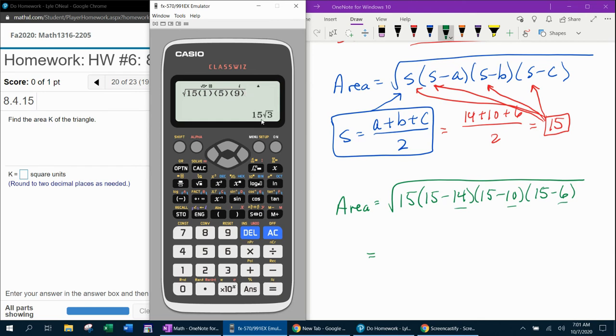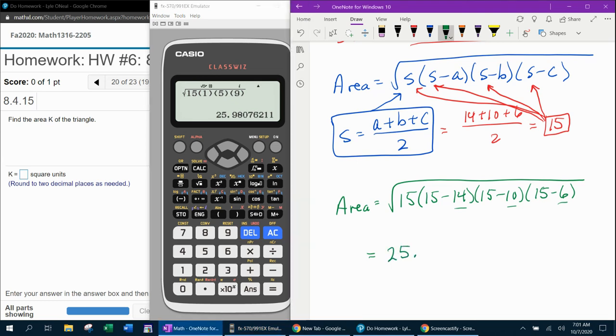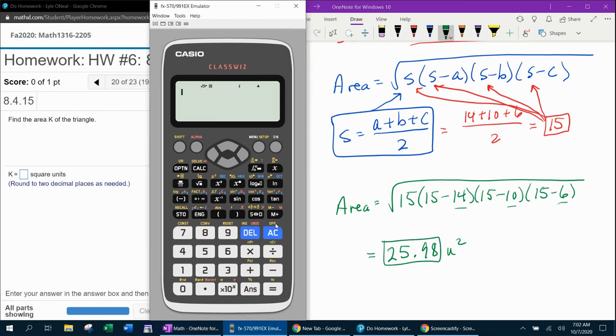That's the exact answer. They want the answer rounded to two decimal places. So if I hit the SD button, that's going to give me 25.98 rounded. And that would be whatever the units are squared, square meters, square feet, whatever the units are.